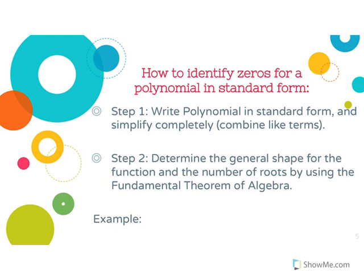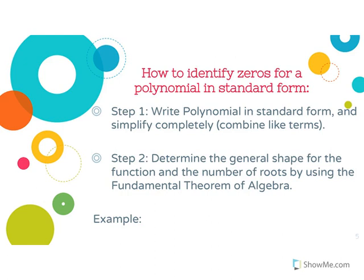We're going to go over the steps on how to identify zeros from a polynomial in standard form. Standard form is when you have ax-squared plus bx plus c — that's the standard form of a quadratic polynomial. Step one: write the polynomial in standard form and simplify completely, meaning combine like terms. Step two: determine the general shape of the function and the number of roots by using the fundamental theorem of algebra.